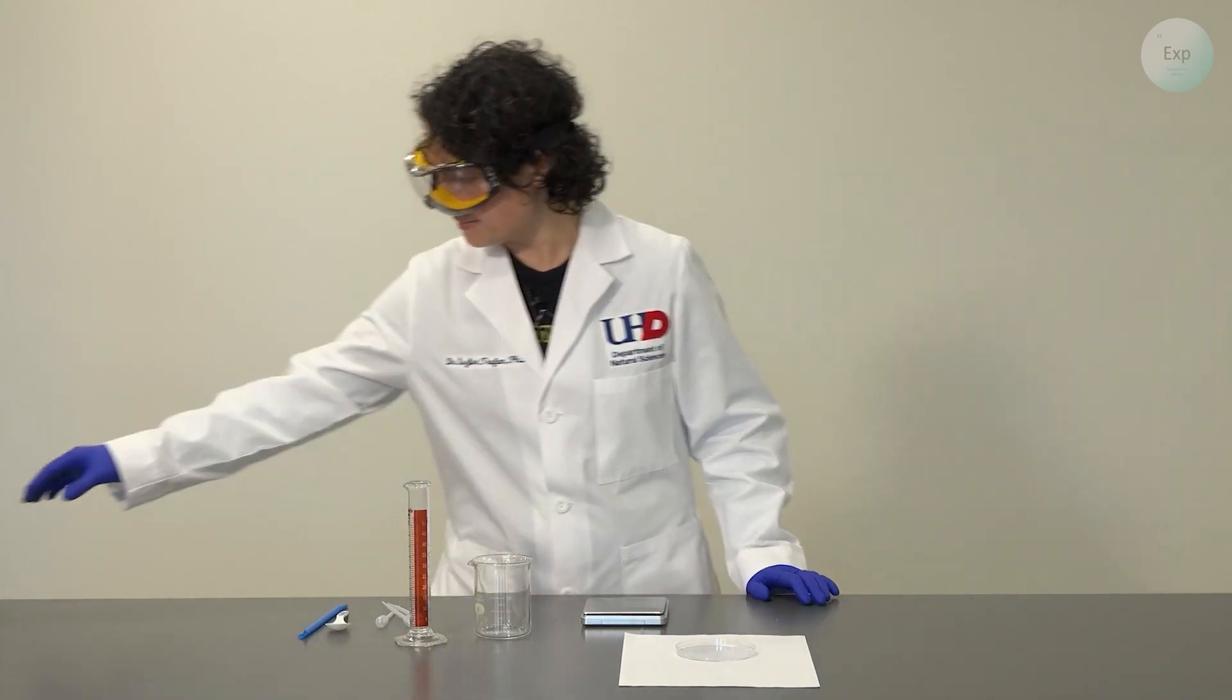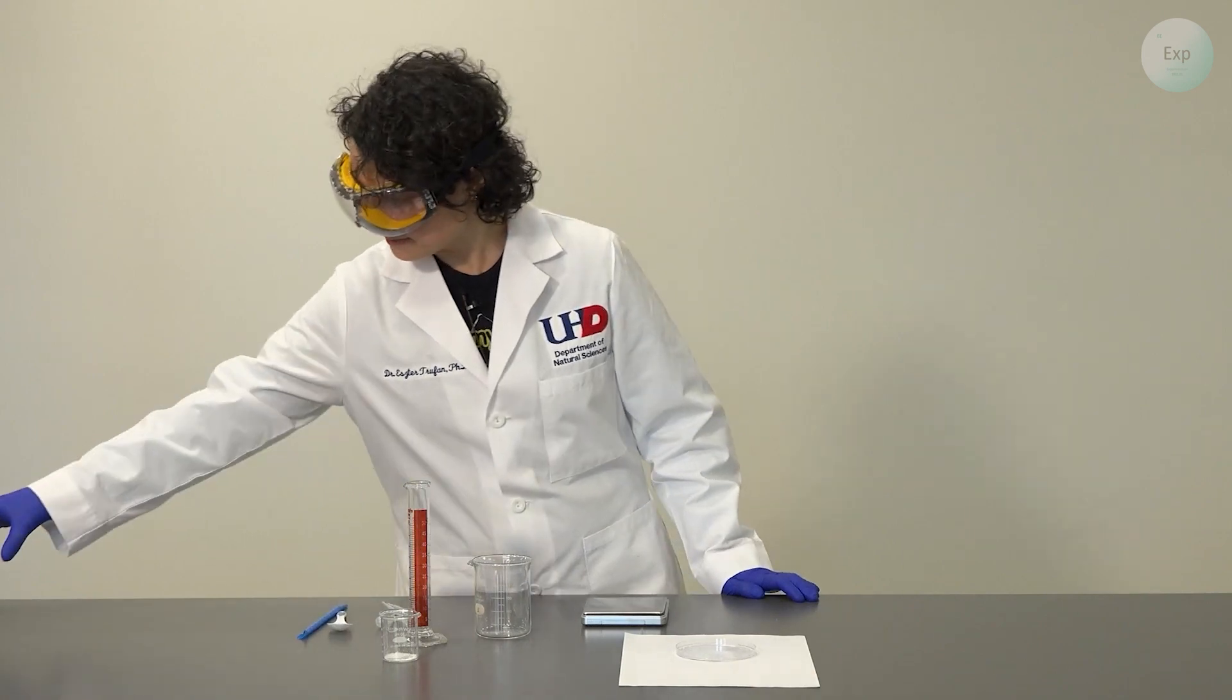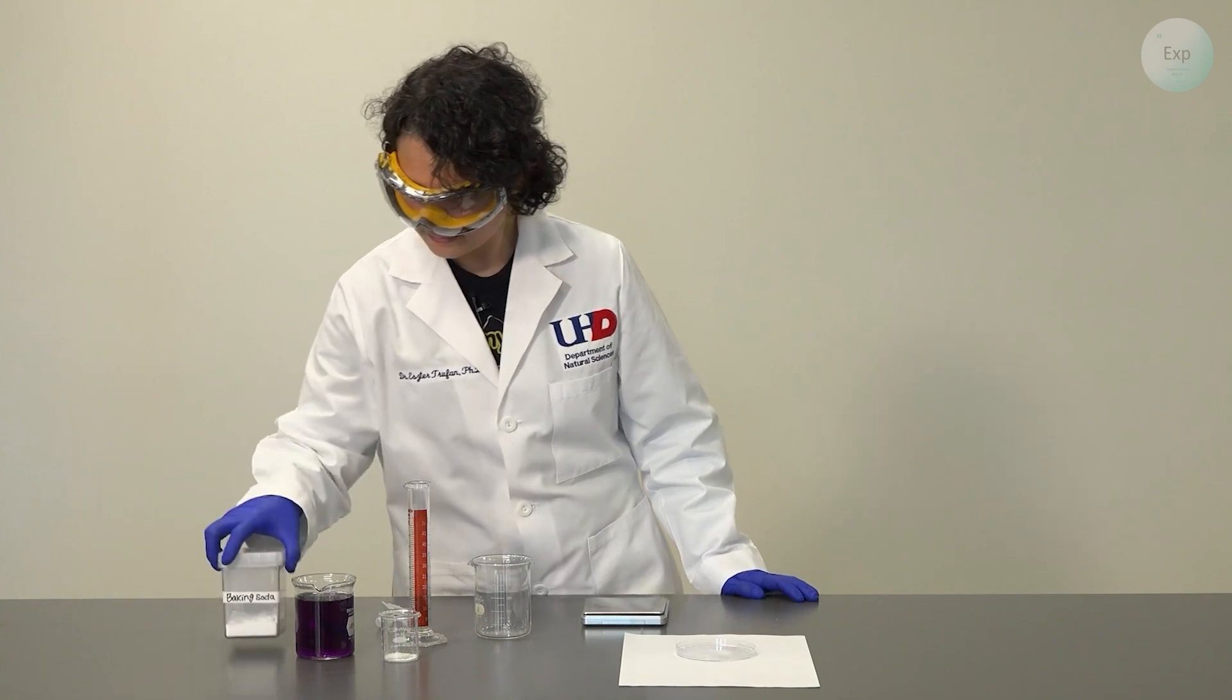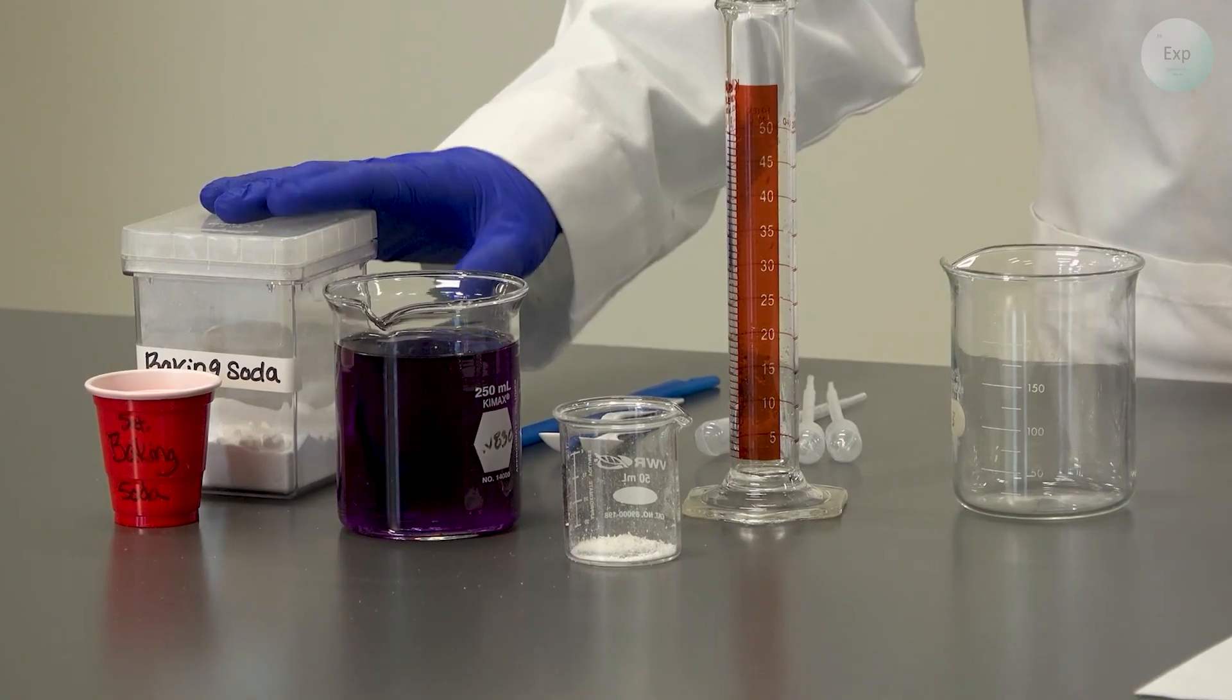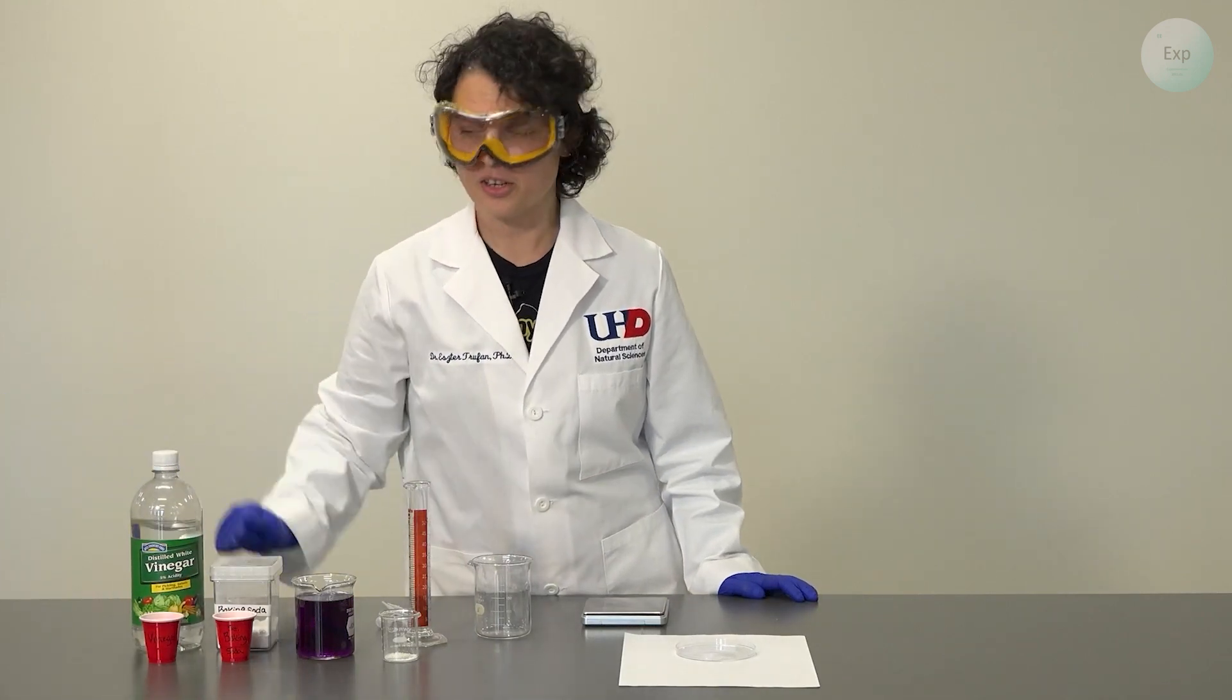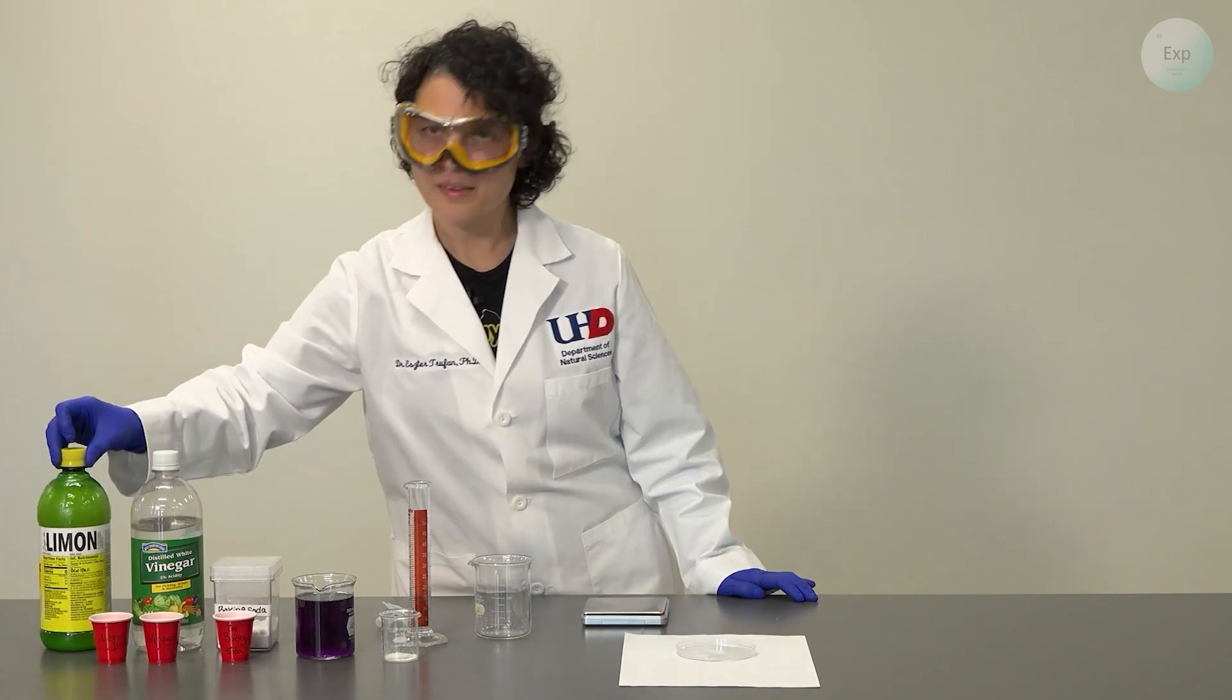On the chemical side we're going to need our diaper polymer, indicator solution, some baking soda solution, some vinegar, and some lemon juice.